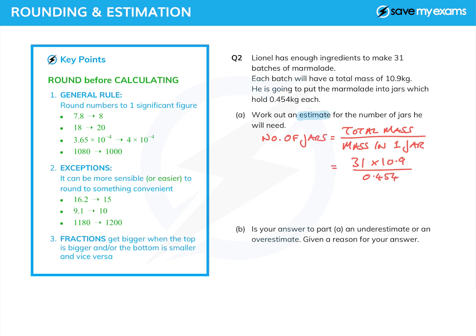That's 31 batches at 10.9 kilograms each, divided by 0.454. Now we're only asked to find an estimate though, so let's round all of these numbers. This is going to be approximately 30 times 10 over 0.5 on the bottom because that's pretty close to what we want. So that's 30 times 10 is 300 over 0.5, and when you divide by 0.5 you're in fact multiplying by 2, and so we get 600 jars as an estimate.